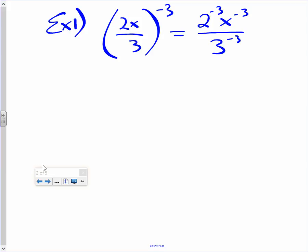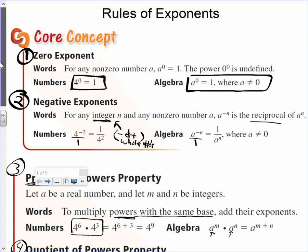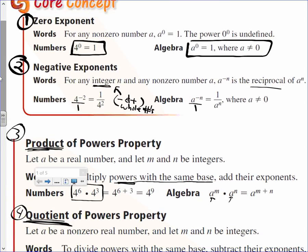Now what rule should I apply to the situation? Which rule has to do with negative exponents? The second one. It says if you have a negative exponent, you reciprocate.